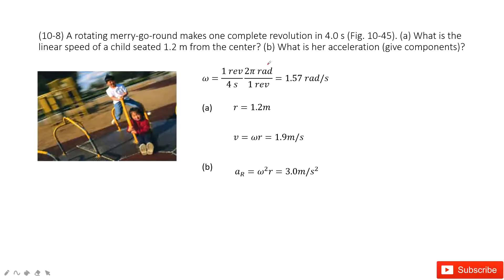First, we know the angular velocity is one revolution in 4 seconds. It makes one complete revolution in 4 seconds. We know one revolution is 2π radians. So we can calculate the angular velocity as 1.57 radians per second, right?